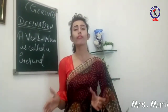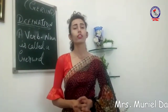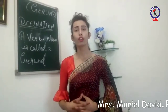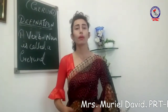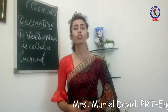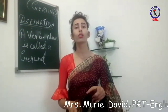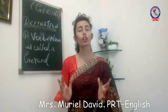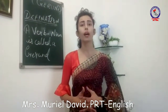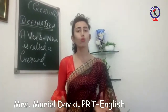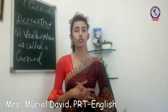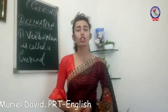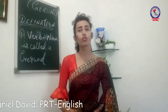Wherever we are finding '-ing', there we can find a Gerund. For example, 'My mother is cooking food.' Here, cooking is a verb — cook is a verb. It is an action done by someone who is working in the kitchen. But when we are adding '-ing', it becomes a Gerund.